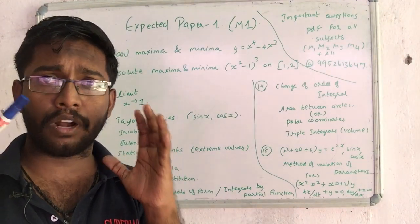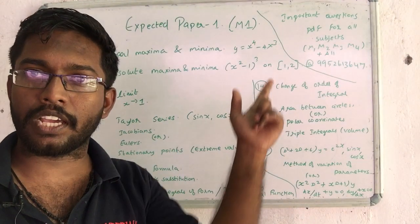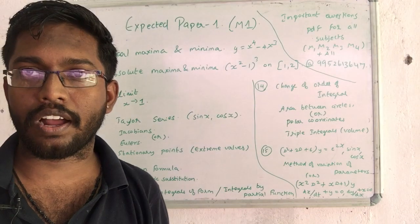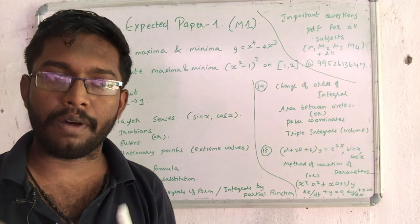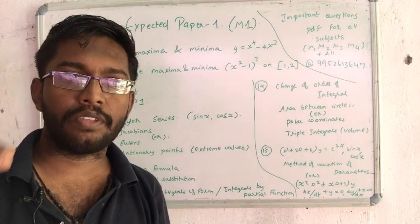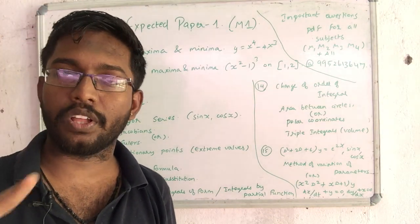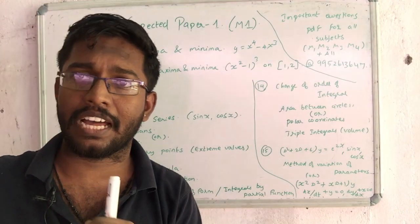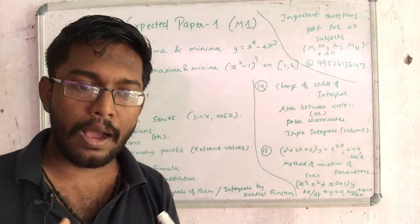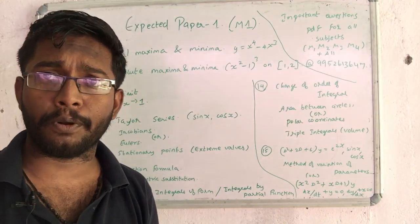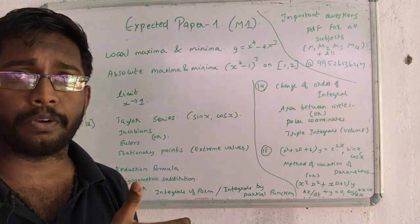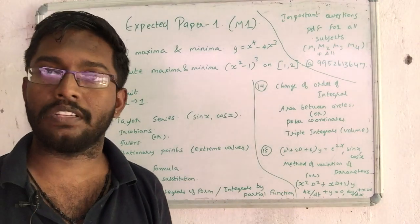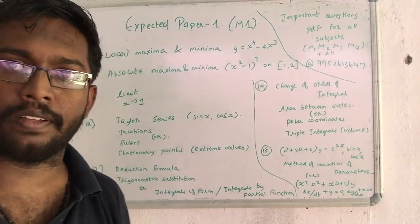If you purchase the important questions in PDF, you can register the number. There is useful content — share the number. The next video is the expected paper 1, paper 2, paper 3, paper 4. Until then, bye.